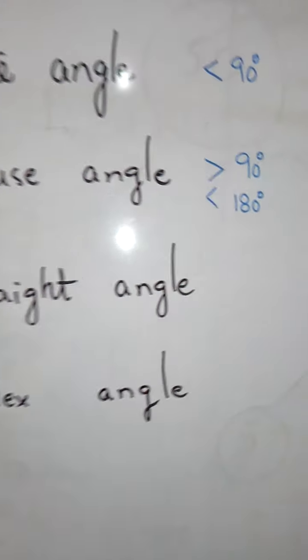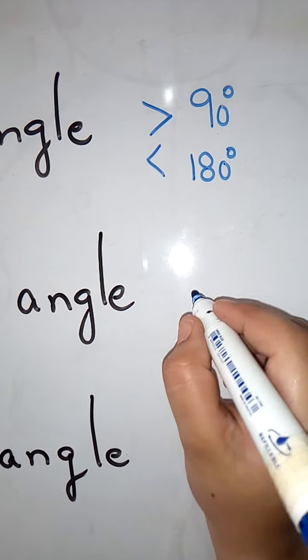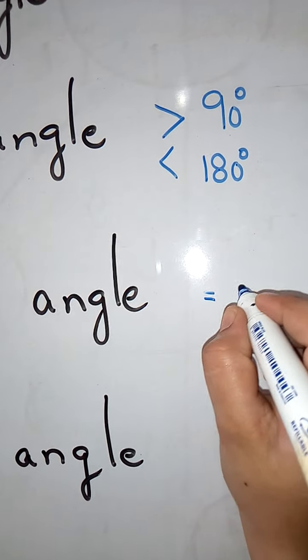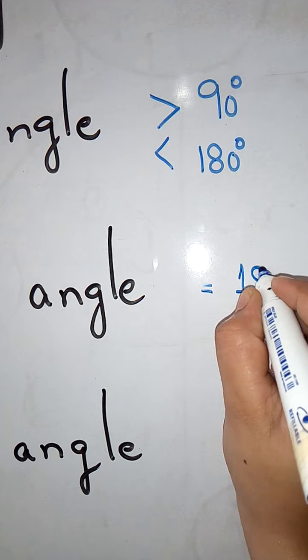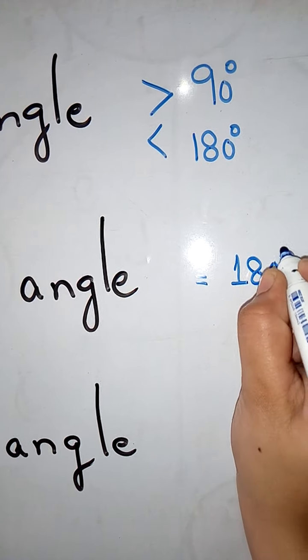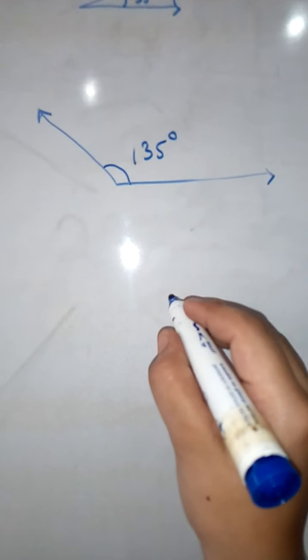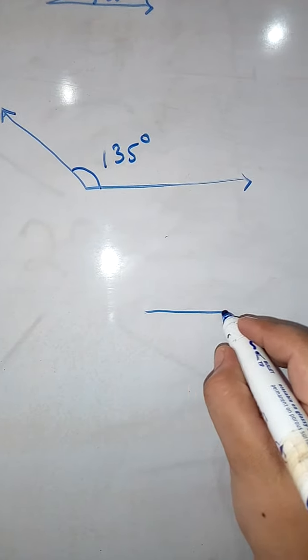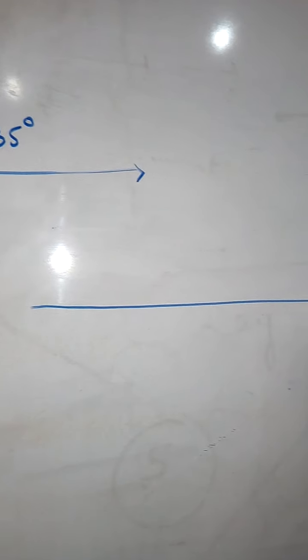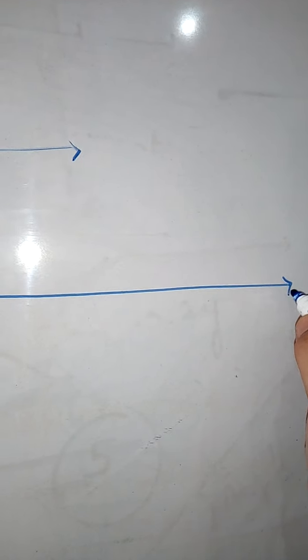Then we have the straight angle. A straight angle is always equal to 180 degrees, and it looks like a straight line.